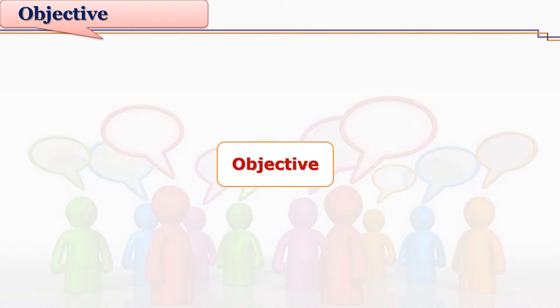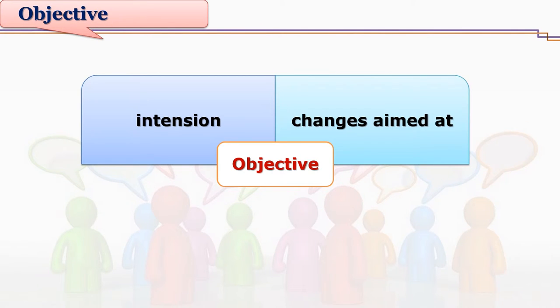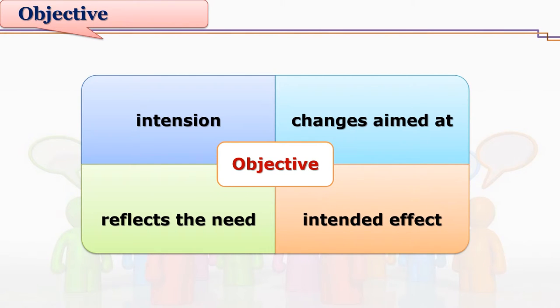Why do we communicate? What are various objectives of communication? We may have some intention in mind so as to start communication. We may be aiming at some changes. Our communication reflects the need which is in the mind of our sender, the person who starts communication. We may also have some effect intended in our mind, so as to achieve this intended effect we start communication.